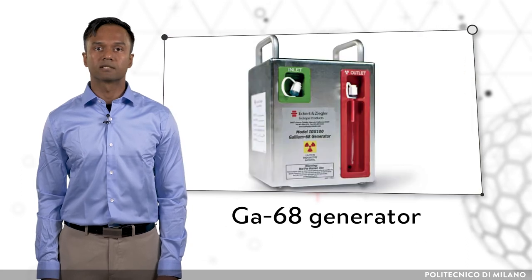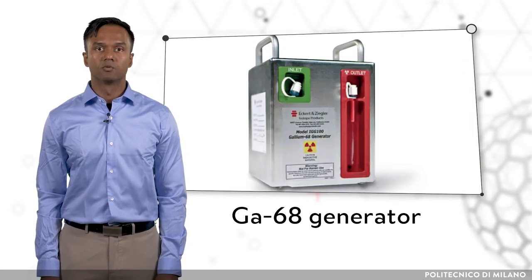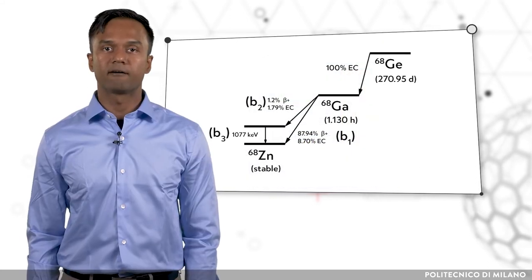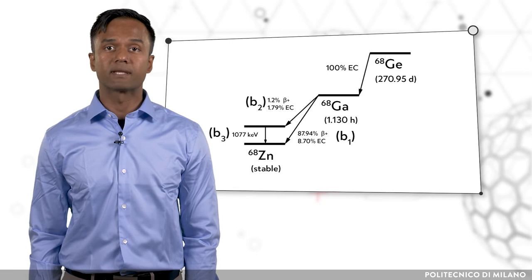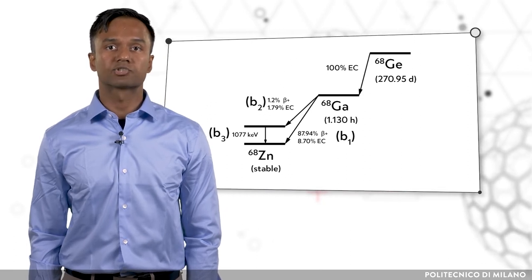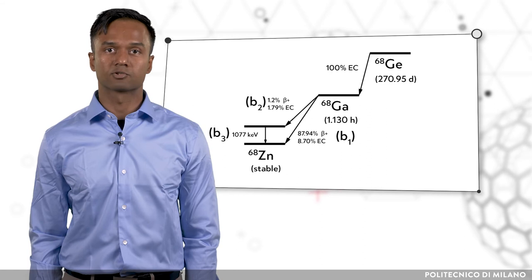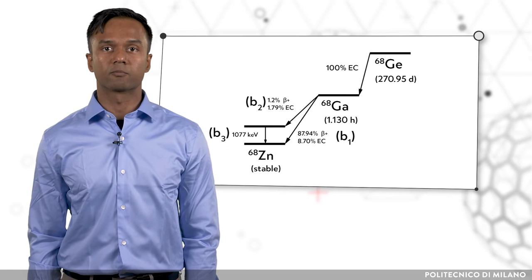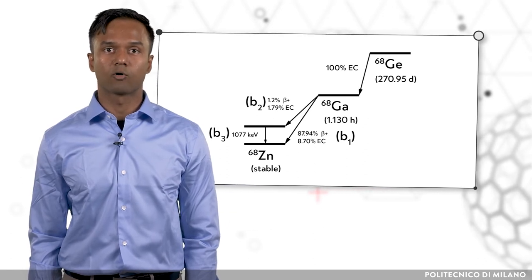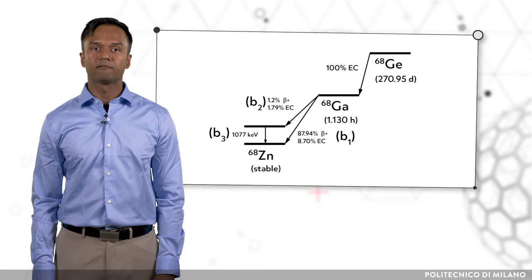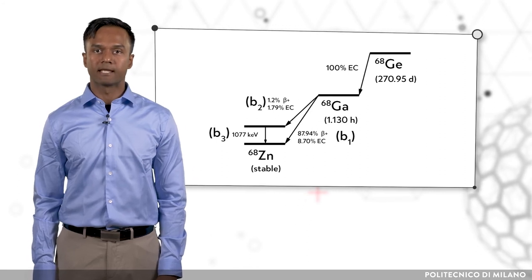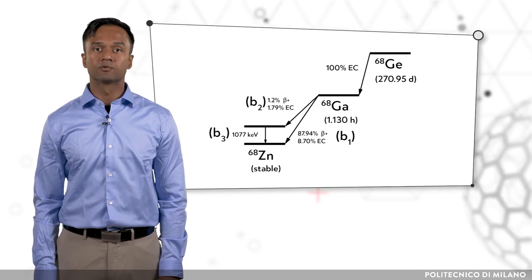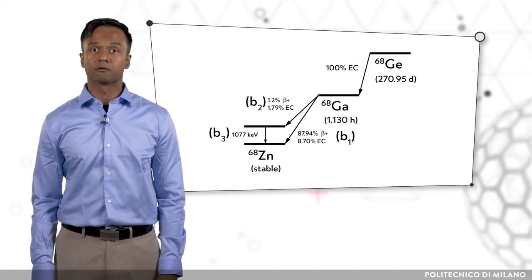Another common generator is the gallium-68 generator, which is produced from germanium-68. Gallium-68 has a half-life of 67.7 minutes and is among the shortest half-life radioisotopes used in the clinic for imaging. Typically, the doses prepared for patients are administered immediately to avoid decay. The half-life of the parent germanium-68, on the other hand, is 271 days, which allows it to be used as a generator for at least a couple of years.